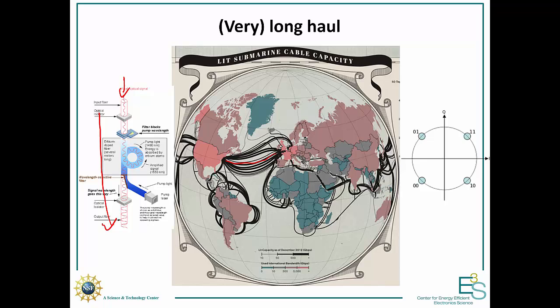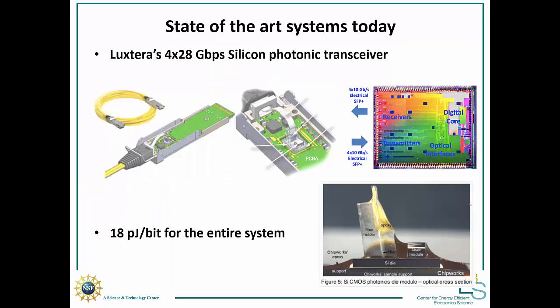And to get even more bandwidth out of these systems we're doing phase shift keying for data communication so that we can really get as much information, as much bandwidth as we can out of these optical links.